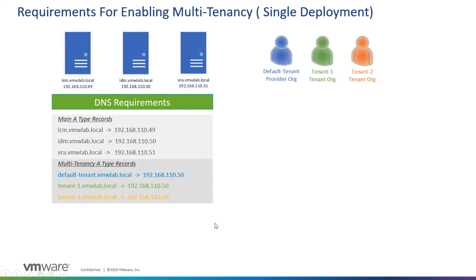The multi-tenancy A-type records we're creating specifically for enabling multi-tenancy are: first, a namespace FQDN for the default tenant — default-tenant.vmwlab.local — representing our provider org, and then two additional FQDNs, one for tenant-1 and one for tenant-2. All three are pointing to the physical IP address of the Identity Manager appliance. These hostnames will be used to access each of those VIDM instances respectively.